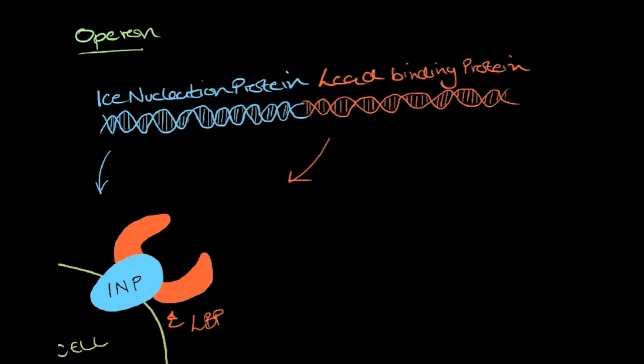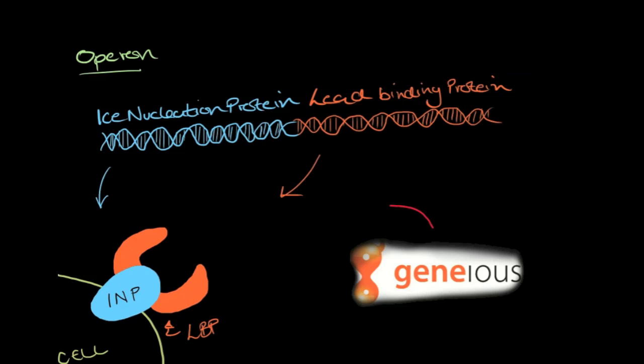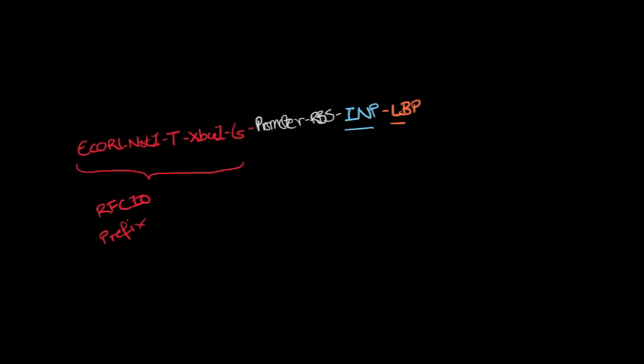Like before, we check our sequences again for any forbidden sites. Both of these proteins are quite long, so an easier method is to use gene design software, such as Genius, which can be set to search for a specific set of sites. Once we have the all clear, we now start to put together the biobrick like before. We start with the prefix, EcoR1, NotI, thymine, XbaI, guanine, then the promoter, RBS, INP construct, then lead binding protein.